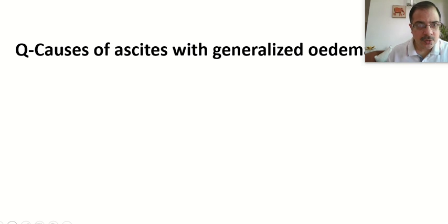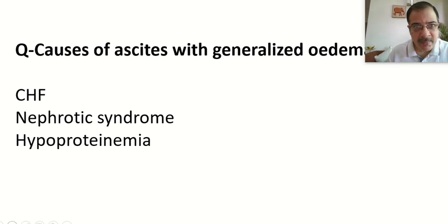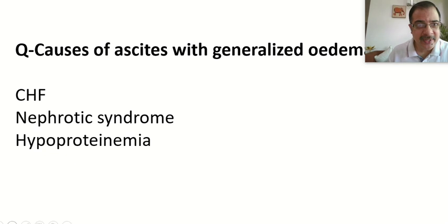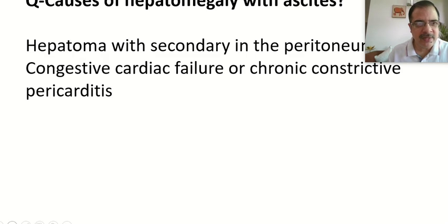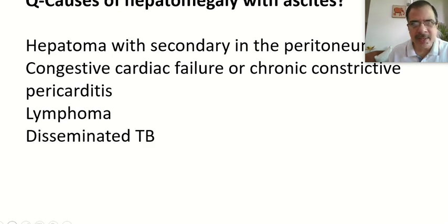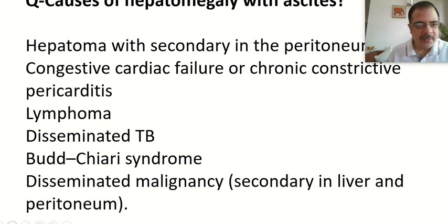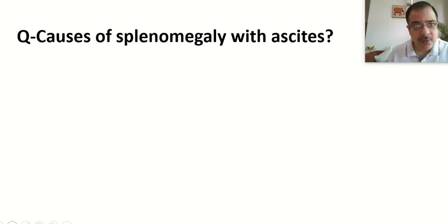If there is generalized edema, the causes of ascites with generalized edema are: advanced CHF, nephrotic syndrome, and hypoproteinemia. In constrictive pericarditis, ascites is out of proportion to pedal edema — ascites is very severe while pedal edema is mild or absent. This is a characteristic feature of constrictive pericarditis. Causes of hepatomegaly with ascites include hepatoma, CHF, constrictive pericarditis, lymphomas, disseminated tuberculosis, Budd-Chiari syndrome with tender hepatomegaly, and disseminated malignancies with liver secondaries.